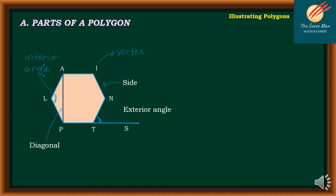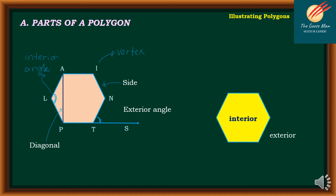Aside from this, we have also some parts of a polygon. All the space inside the polygon is what we call the interior, while the points outside the polygon are what we call the exterior.